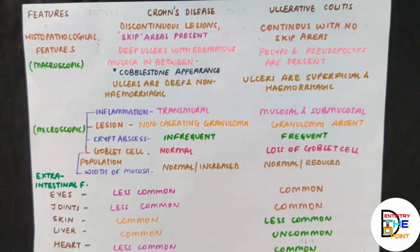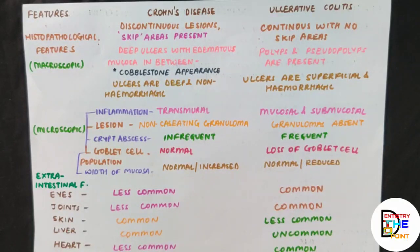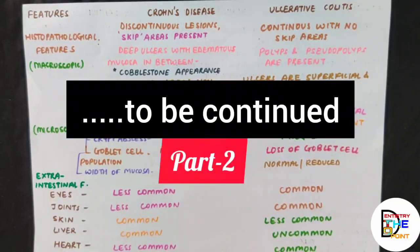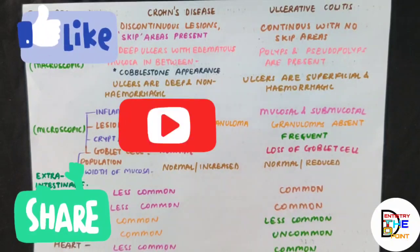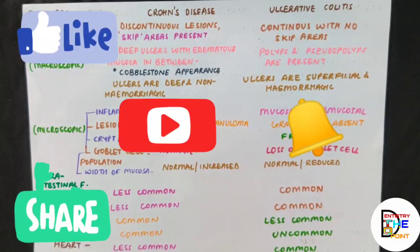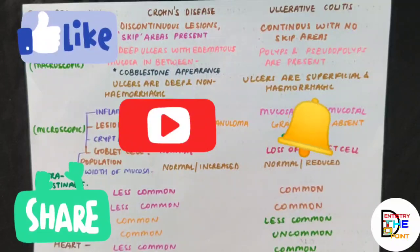That's all for this video, where we covered the introduction, clinical features, histopathological features, complications, and extra-intestinal manifestations of Crohn's disease and ulcerative colitis. In the next part, we will deal with investigations and the treatment and management of both diseases. If you enjoyed this video, please like, share, and subscribe to our channel, and hit the bell icon so you're notified every time we upload. Stay tuned for the next part — thank you so much.